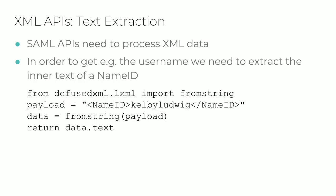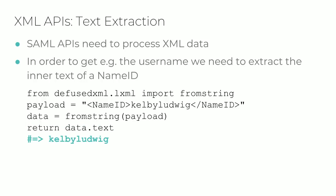To get a better sense of this, considering that SAML SPs need to extract relevant XML text during authentication, it helps to understand how this is accomplished at the XML API level. This code snippet shows what extracting a name ID looks like using the popular Python LXML library. First we convert a string representing XML into an object, then call a simple .text method on that element to extract the inner text. The output is just what you'd expect: the name ID value, 'Kelby Ludwig'.